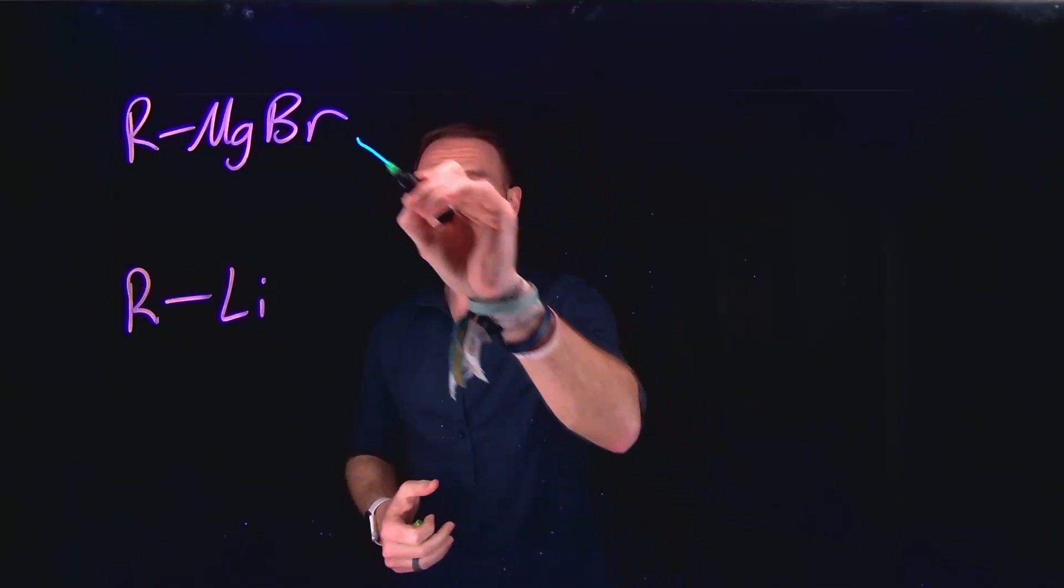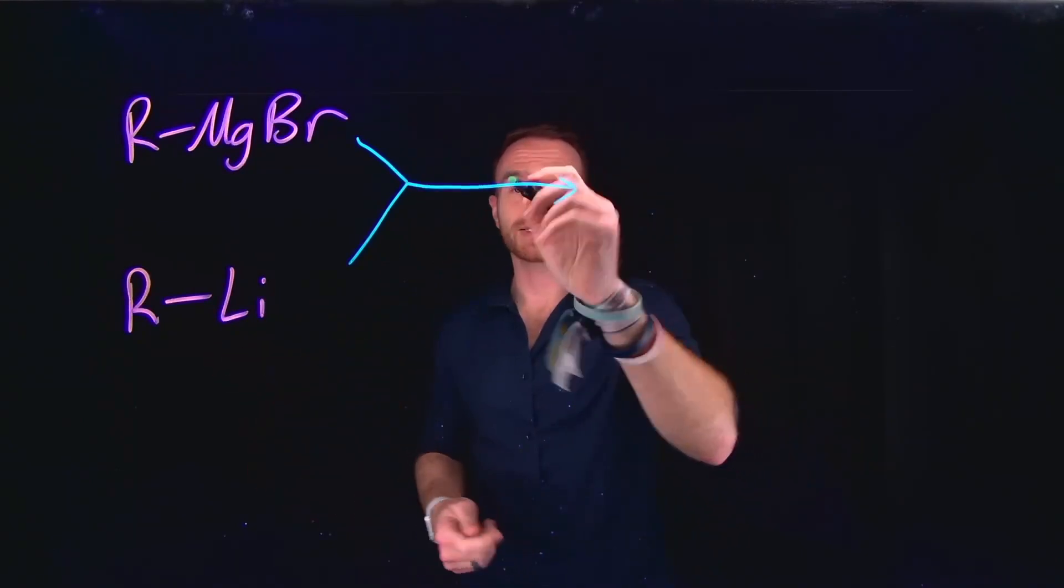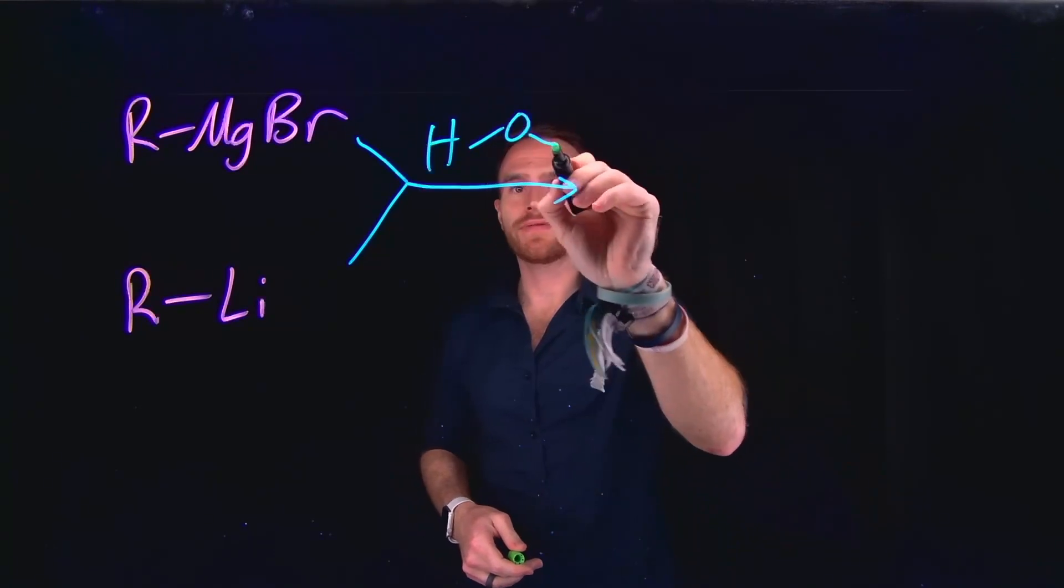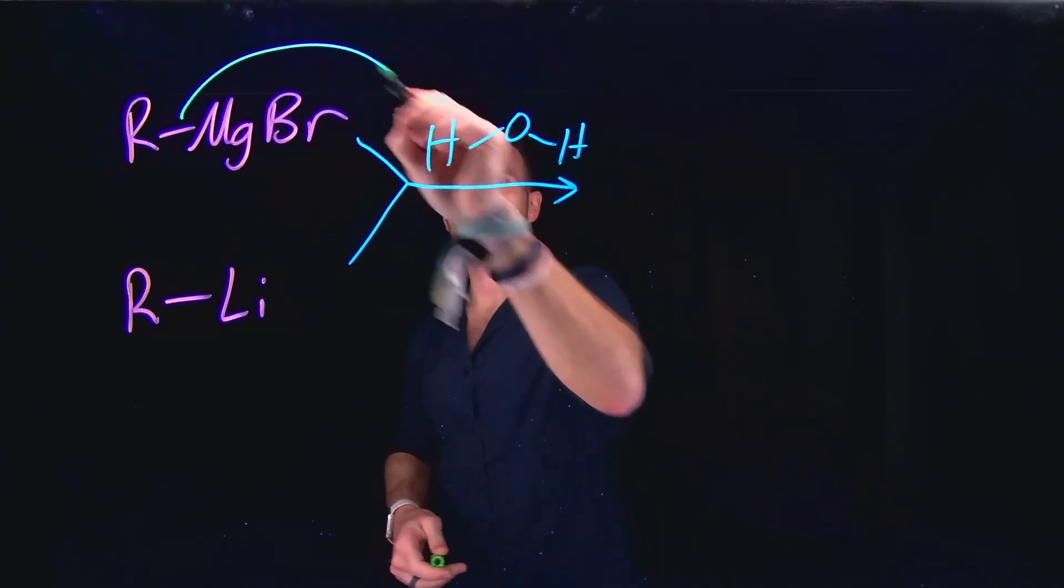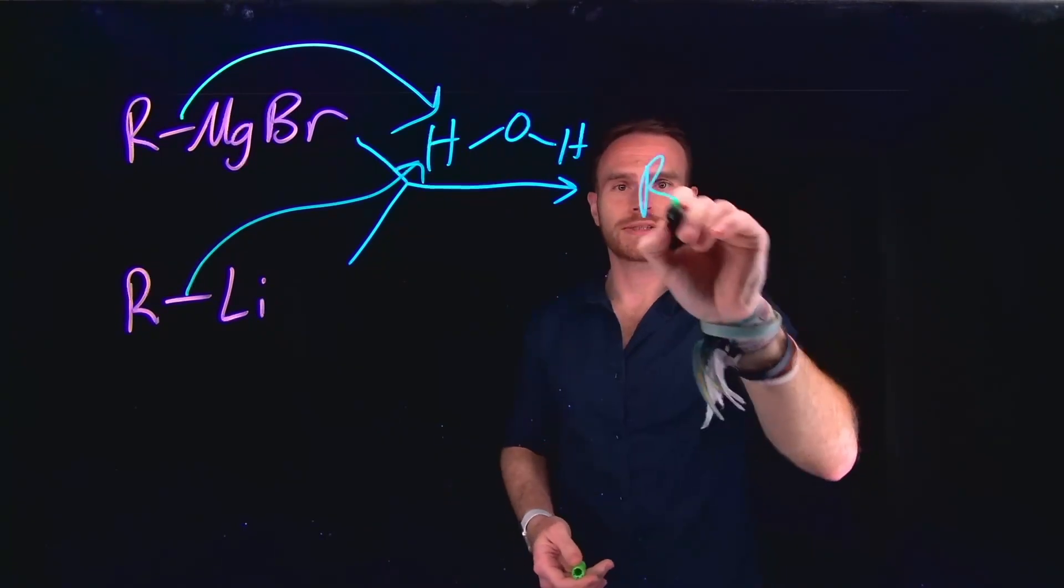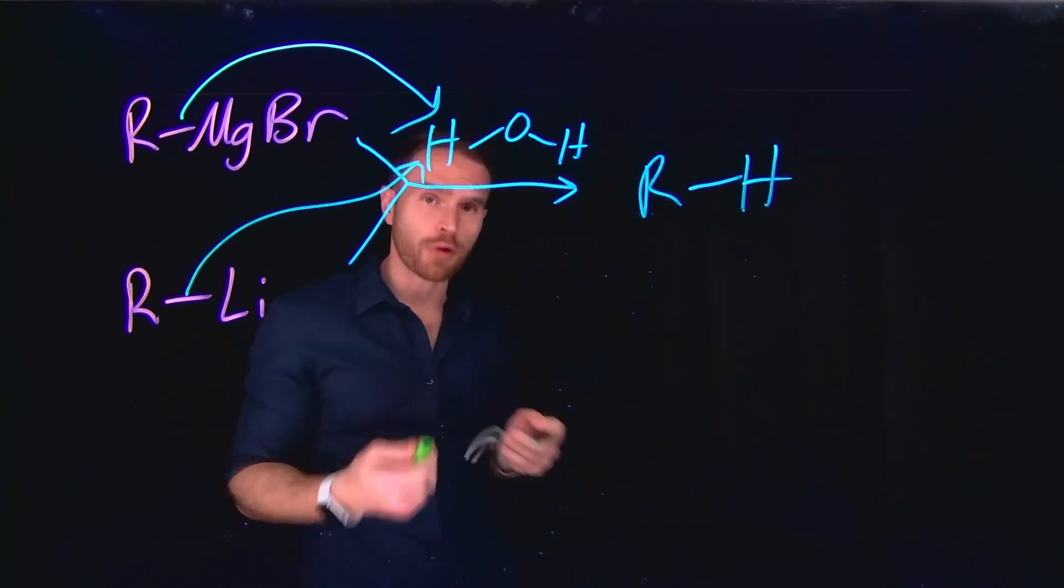Being strong bases, both Grignard reagents and organolithium compounds will react with things that are relatively weak acids. For example, water will even be deprotonated by both of these in order to generate a new alkyl species. So both of these reactions act as bases towards the proton in water.